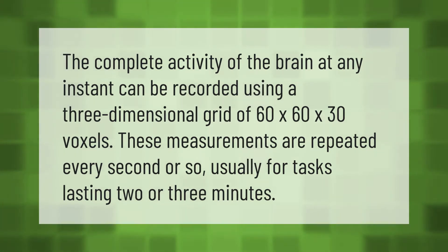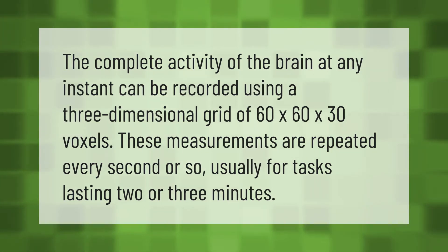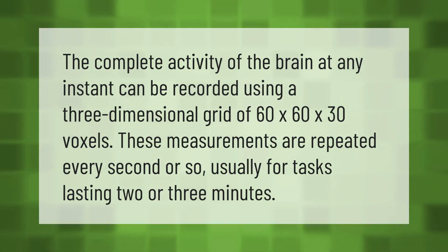The complete activity of the brain at any instant can be recorded using a three-dimensional grid of 60 by 60 by 30 voxels. These measurements are repeated every second or so, usually for tasks lasting two or three minutes.